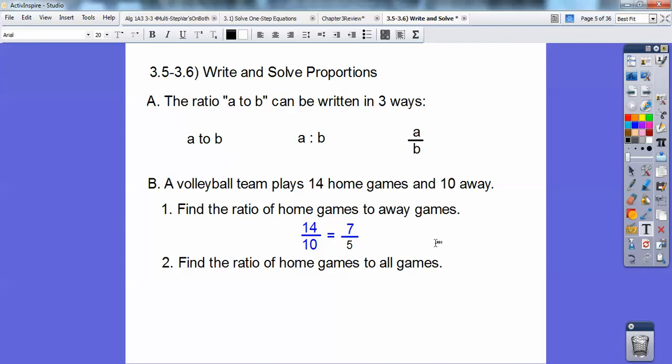Find the ratio of home games to all games. Well, there's 14 home games and there's 24 total games. So that one's going to be 14 over 24. And then go ahead and reduce that to 7 over 12.